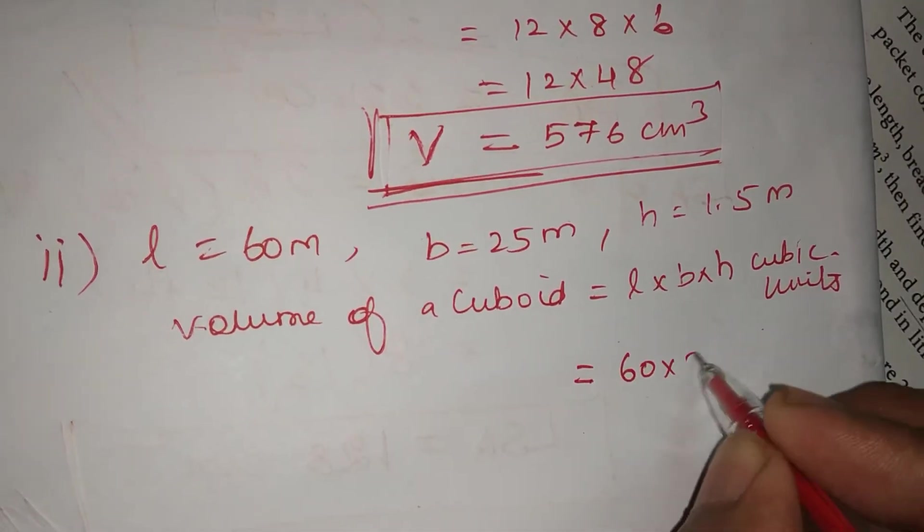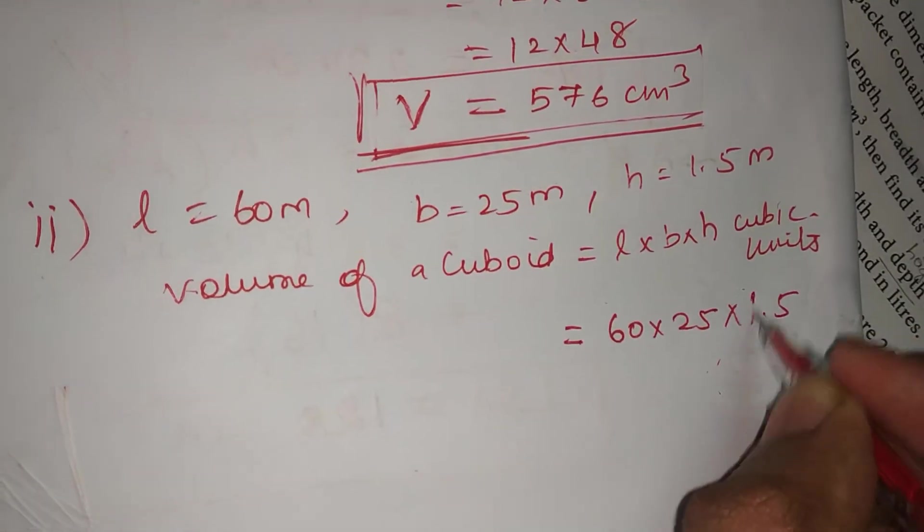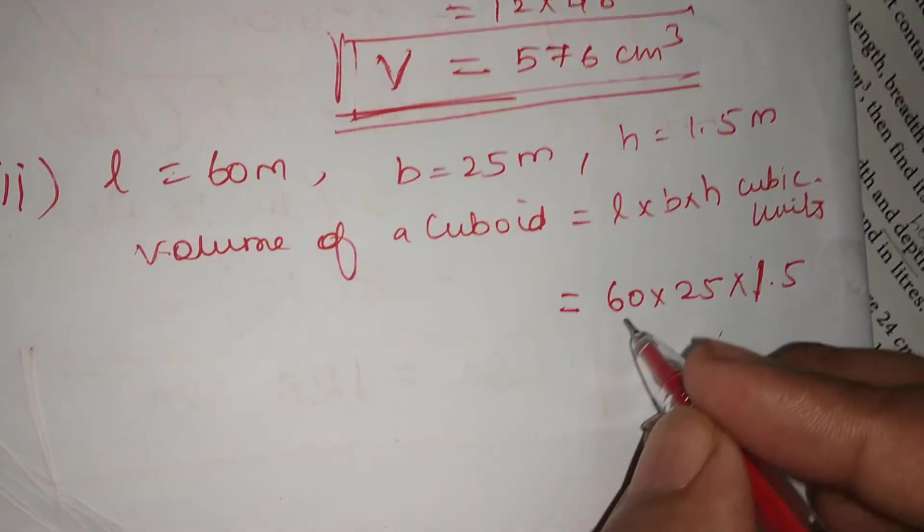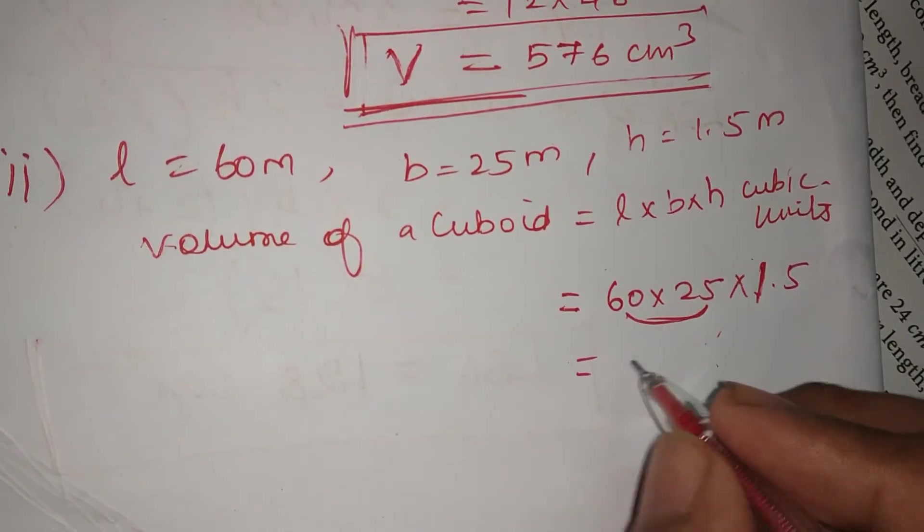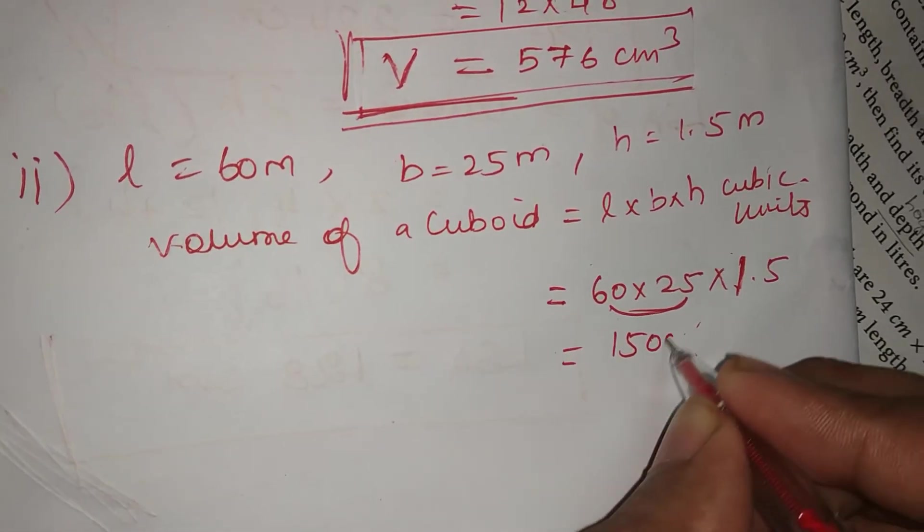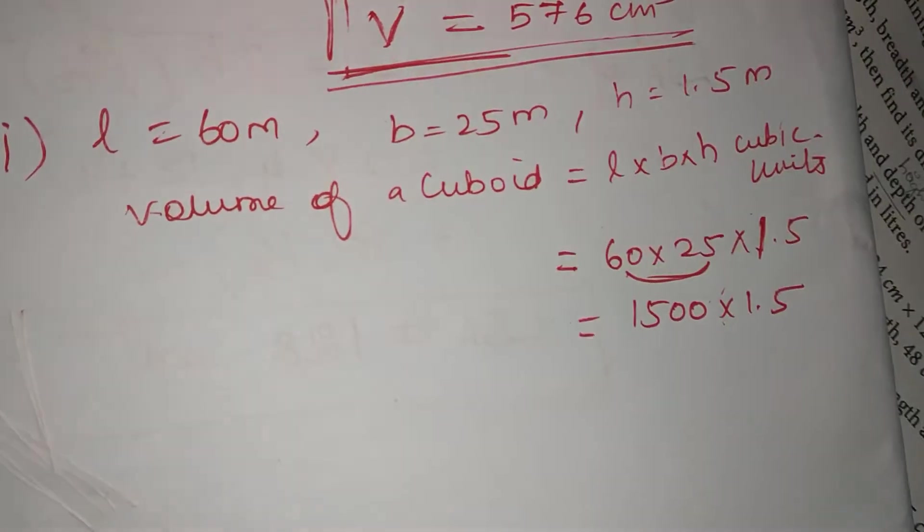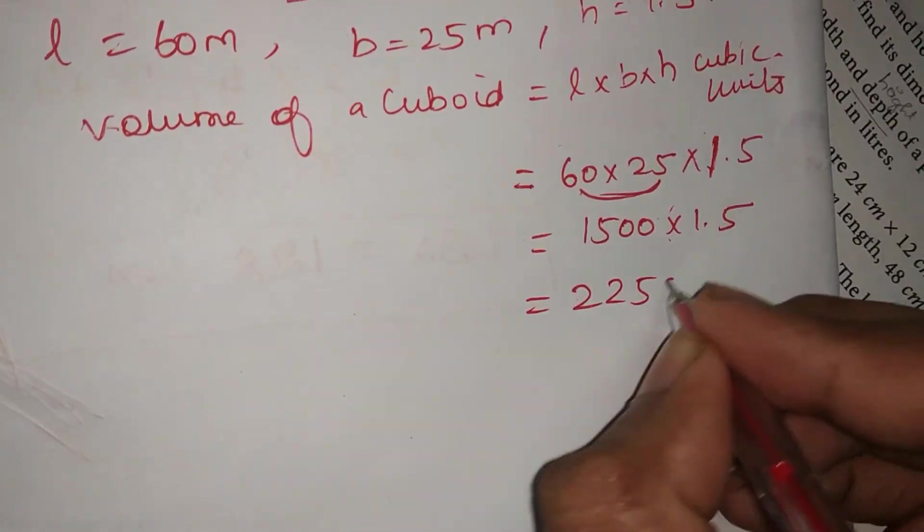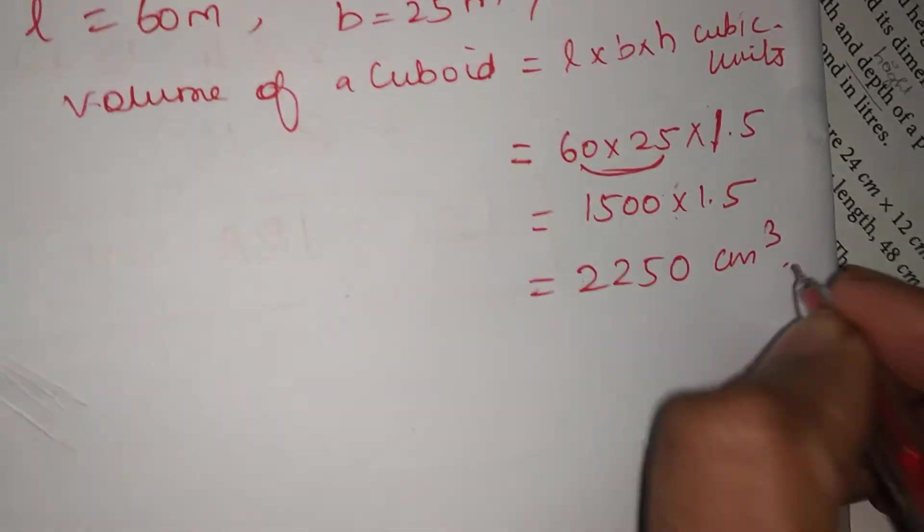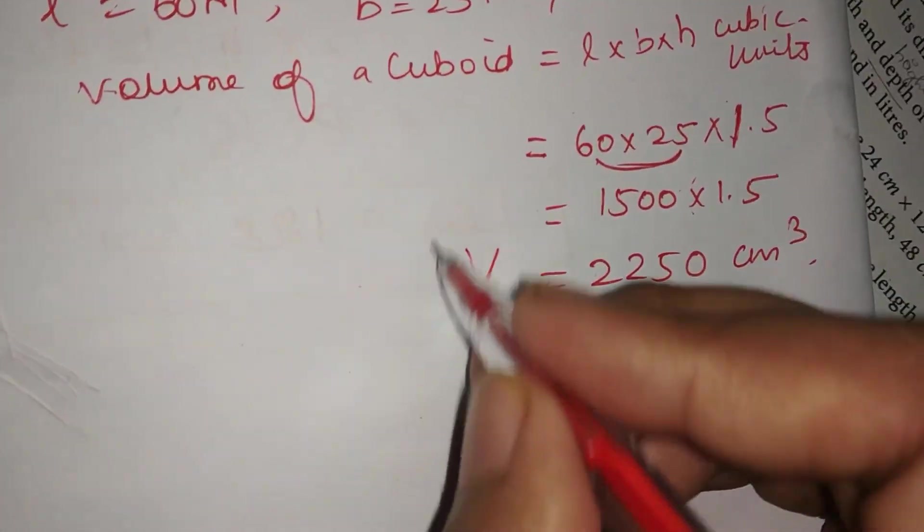60 into 25 into 1.5. So 60 into 25 will give, into 1.5. This will give 2250 cm cubed.